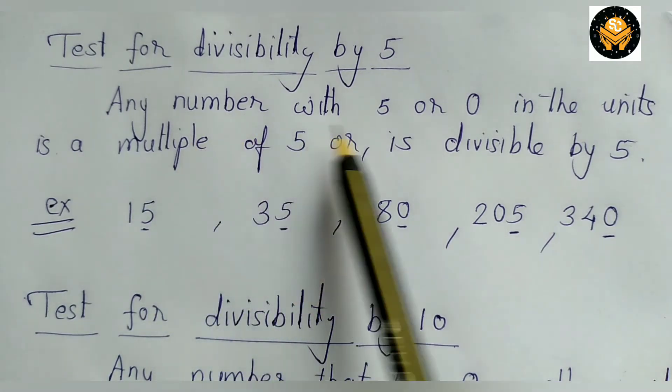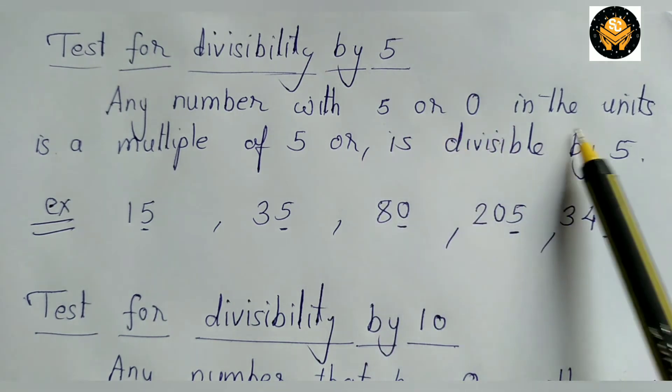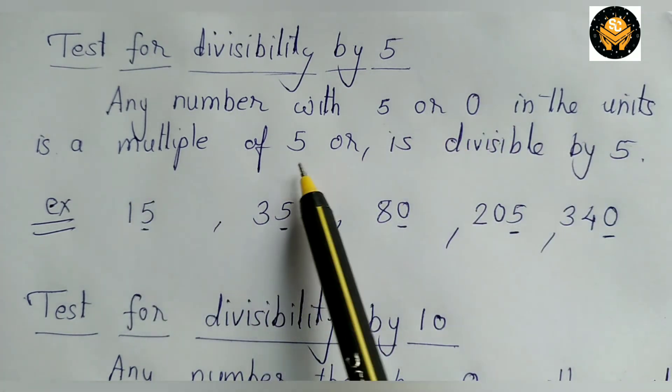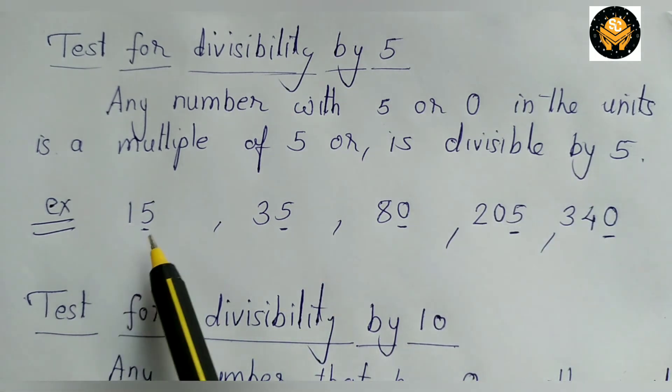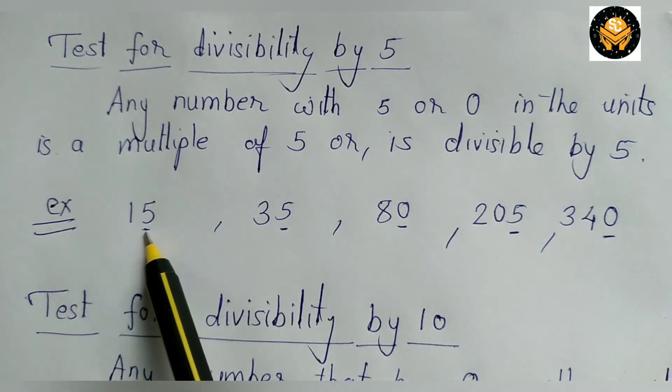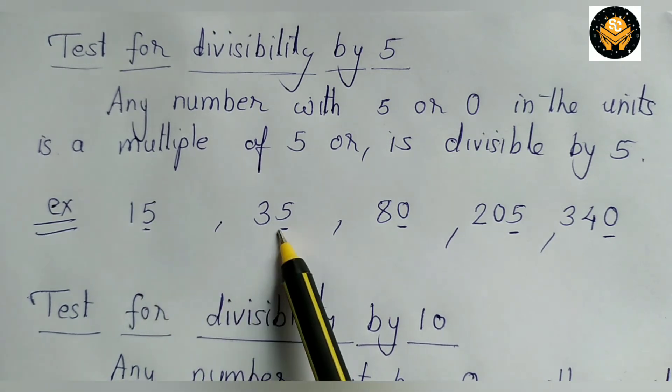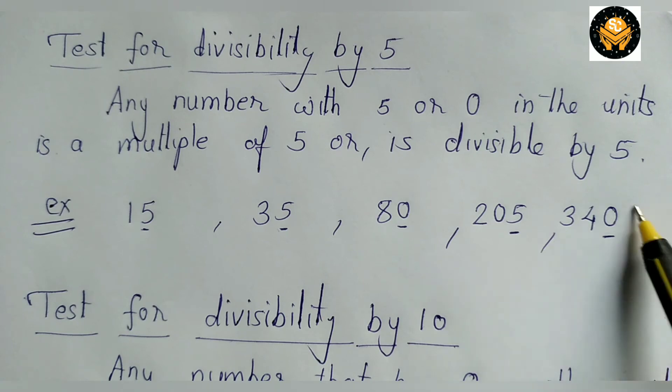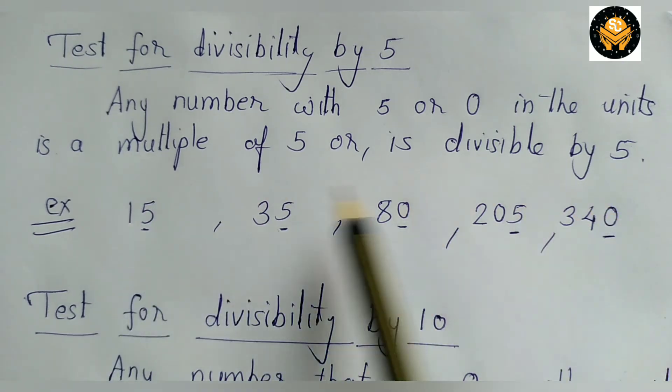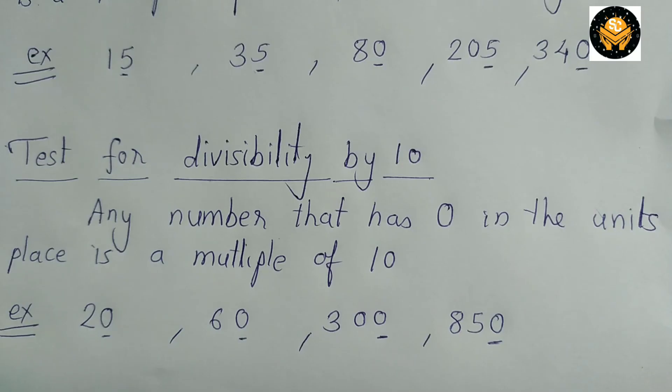Now let's see divisibility test for 5. Any number with 5 or 0 in the unit place is a multiple of 5 or is divisible by 5. Now here in this example on unit place the number is 5 and 0. So all these numbers are divisible by 5.